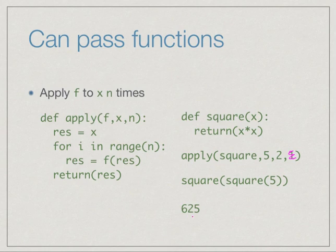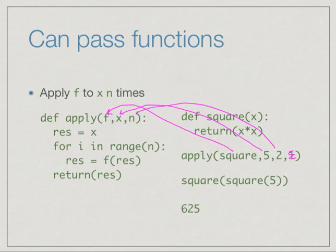What this means is apply square of 5 and then square of that, so do square twice, and therefore you get 5 squared is 25, 25 squared is 625. So what is happening here is that square is being assigned to f, 5 is being assigned to x, and 2 is being assigned to n.